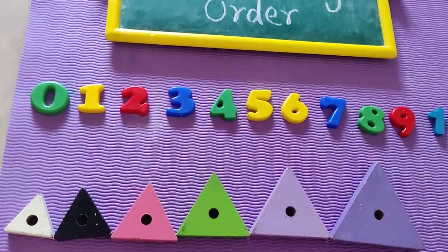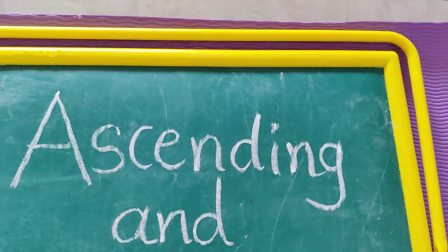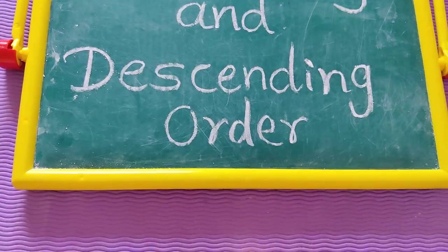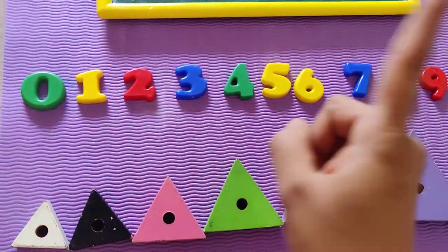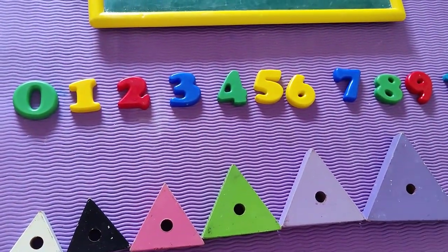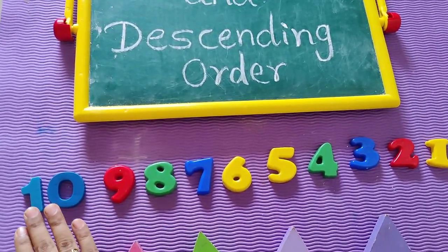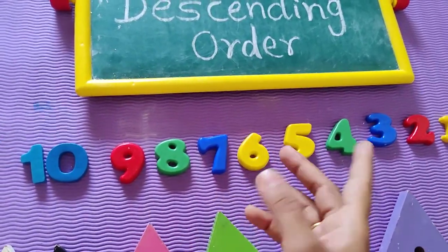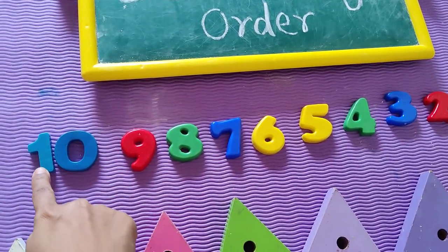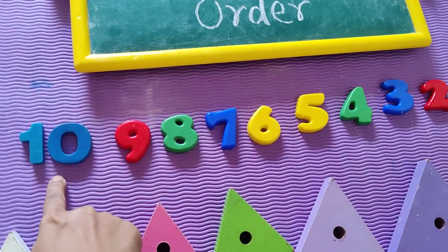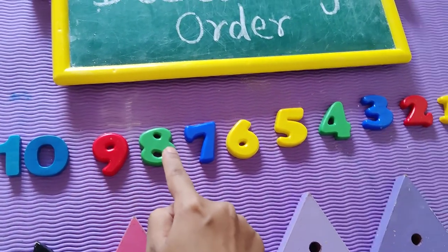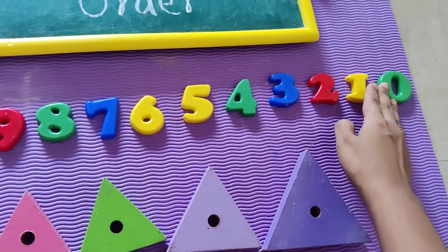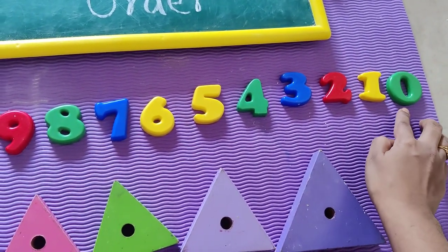Now we will see about descending order. Descending order is exactly the reverse of ascending order. So we arrange the numbers in reverse — the biggest number will come first. Then 10, 9, 8, 7, 6, 5, 4, 3, 2, 1, 0 — the smallest number comes last. Descending order is from biggest to smallest.